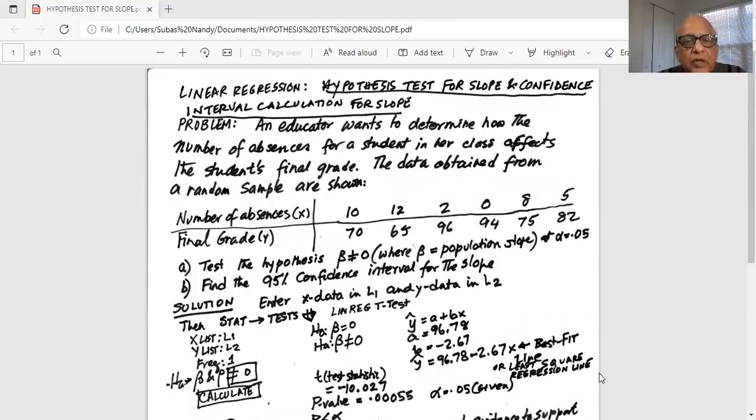Okay, so this is a problem on linear regression hypothesis test for slope and confidence interval calculation for slope. The problem is an educator wants to determine how the number of absences for a student in our class affects the student's final grade. The data obtained from a random sample as shown. So X values, a number of absences and Y, the dependent variable, is final grade. X is the independent variable.